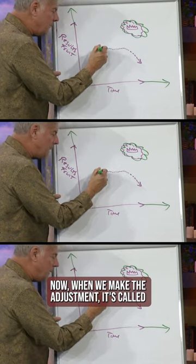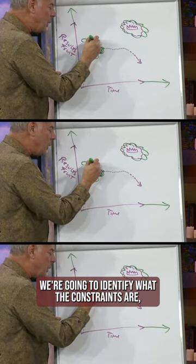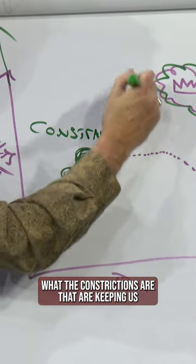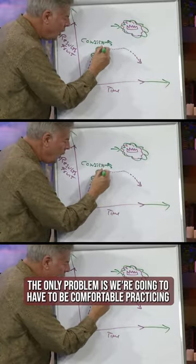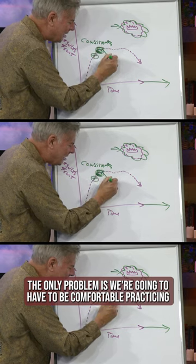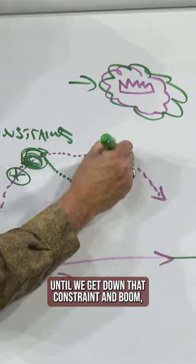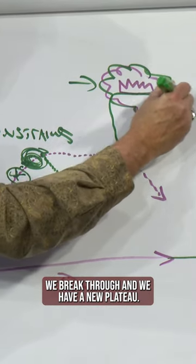Now, when we make the adjustment, we're going to identify what the constraints are, what the constrictions are that are keeping us from this higher level. The only problem is we're going to have to be comfortable practicing until we get down that constraint, and boom, we break through, and we have a new plateau.